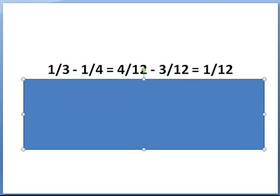Now we're dealing with subtraction, which, like addition, requires a common denominator. We're dealing with one-third minus one-quarter. One-third becomes four-twelfths, and one-fourth becomes three-twelfths. Subtracting: four minus three is one-twelfth.